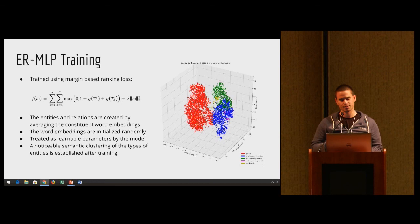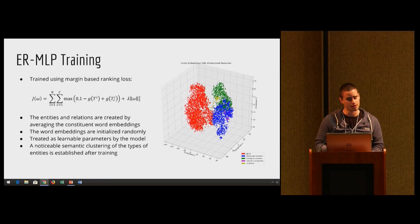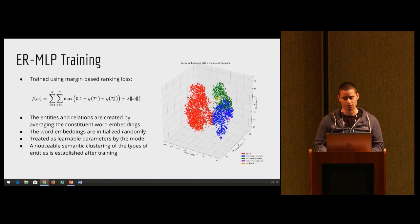After you train this, an interesting thing is all these entities and relations are embeddings that are randomly initialized at first. But after you train this neural network, if you plot the entities using TSNE dimensional reduction, you'll see that the entities of type gene all cluster together semantically and all the entities of type molecular function all cluster together semantically. And I never had to actually tell the ERMLP what exactly an entity is of what type. It simply just learned it on its own.